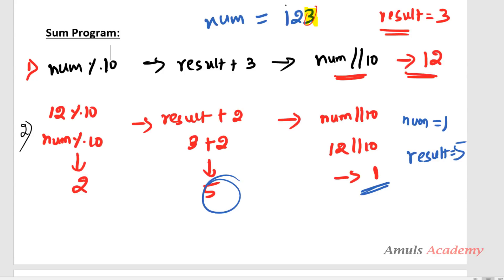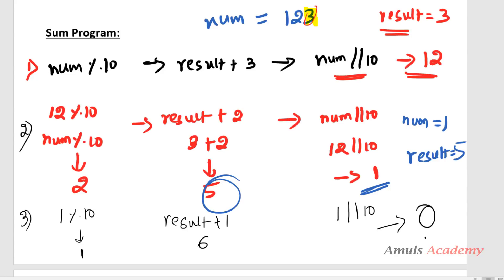Now I want to add 1. I repeat the same step: 1 % 10 gives 1, so result = 5 + 1 = 6. Then 1 // 10 gives 0. When I get 0, I need to stop — that means all digits have been added. We can see we are repeating the same 3 steps: modulus 10, add to result, truncated division.